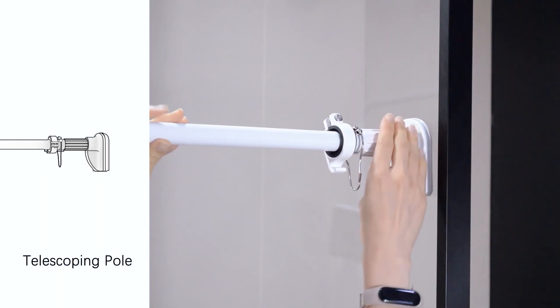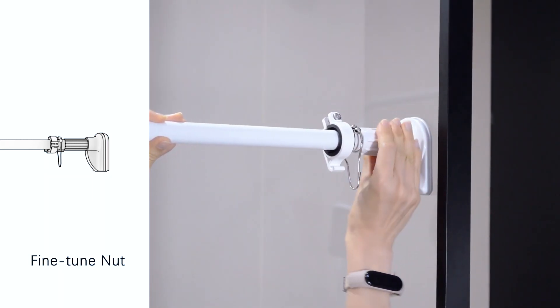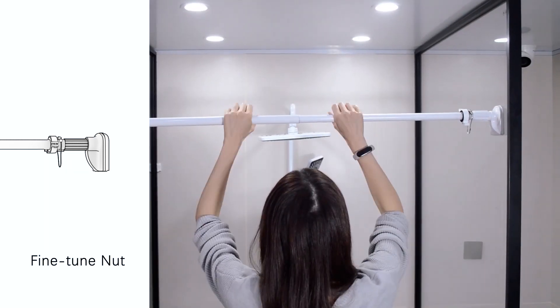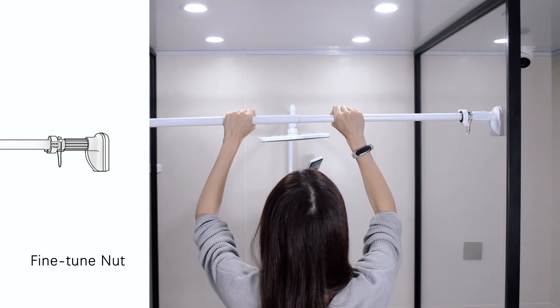Rotate the fine-tuned nut. Lock it when the end cap fits tightly to the wall. Make sure the pole is stably fixed to the wall.